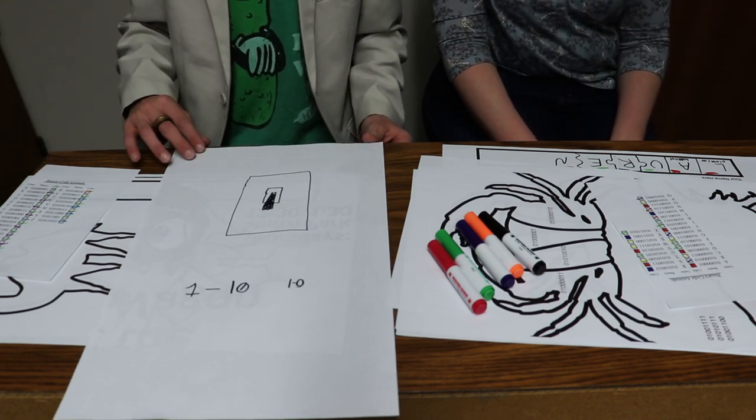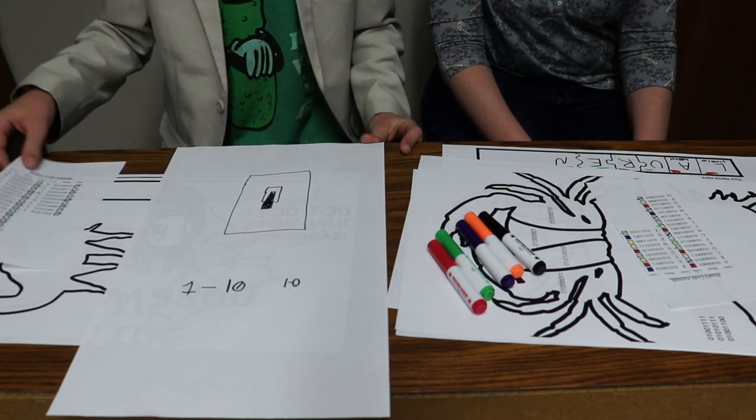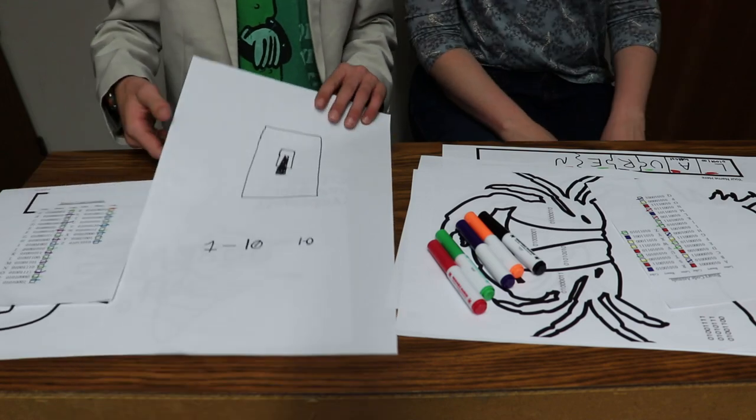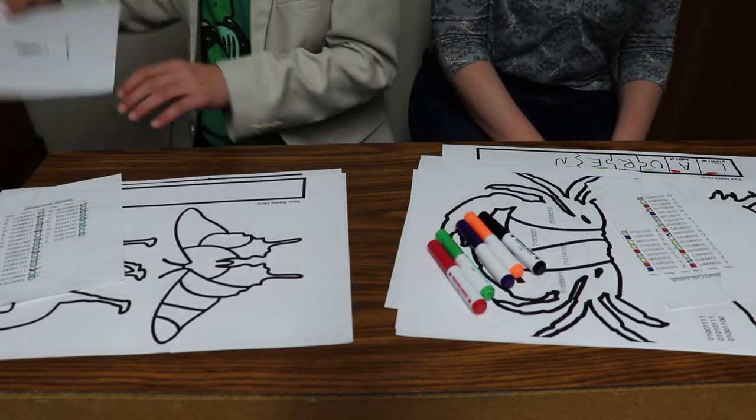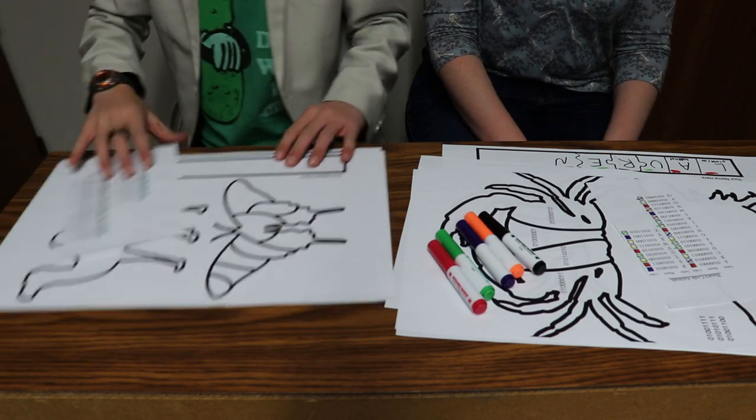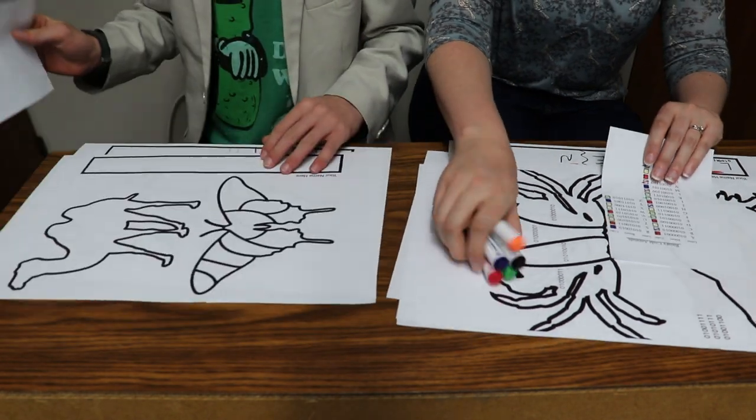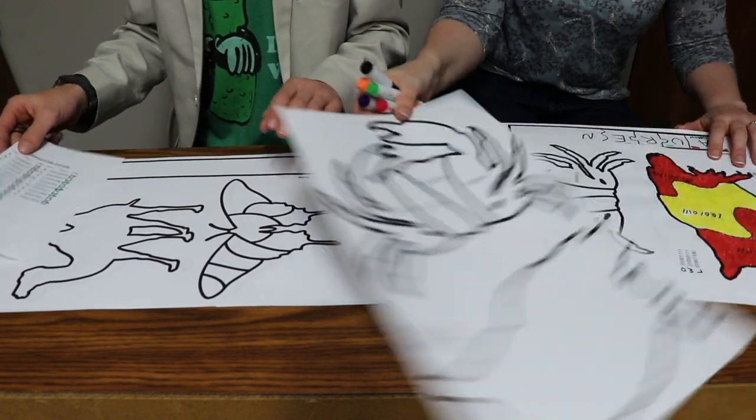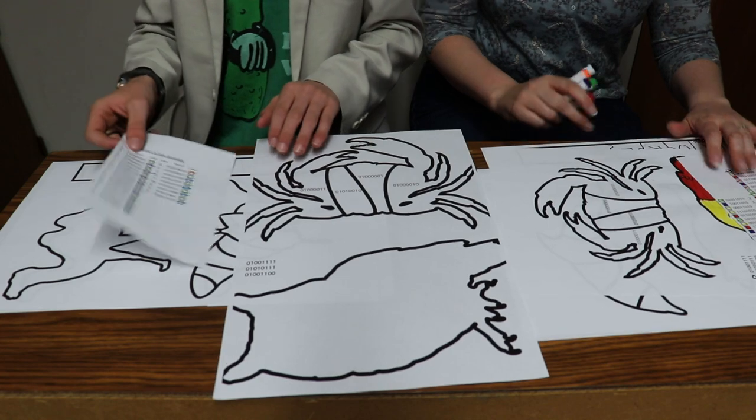All right, so what are we doing today? What we're doing is we're giving an example of how this works but with art. I need a crab. We have a crab, okay, right here. The first crab.